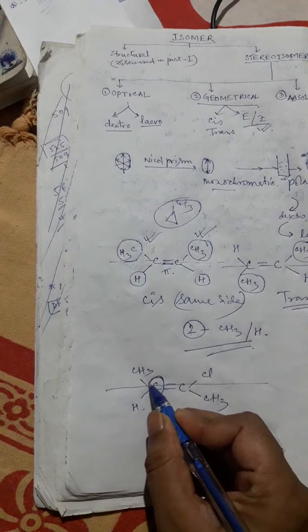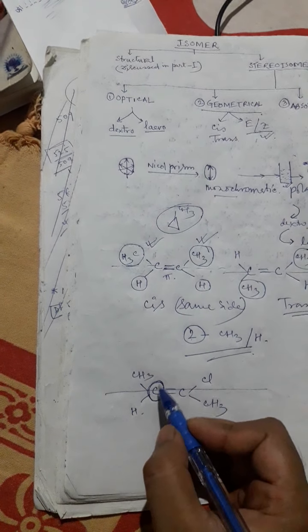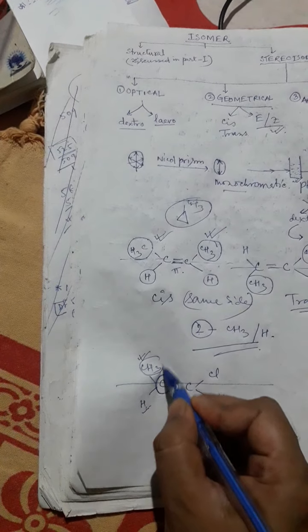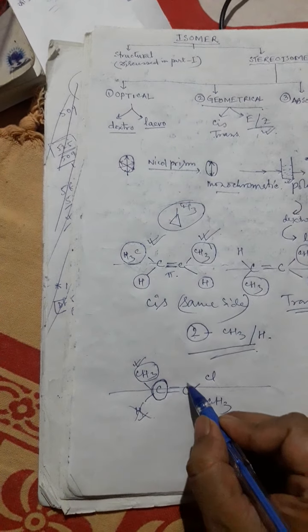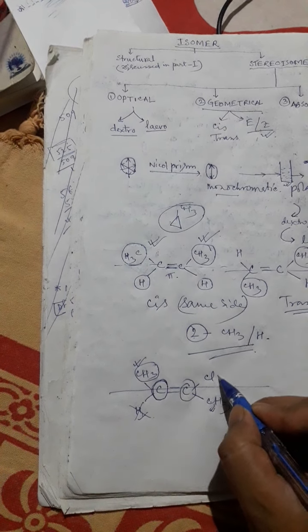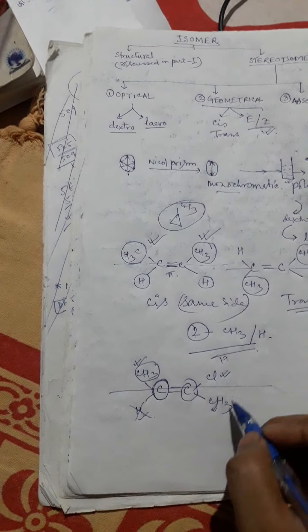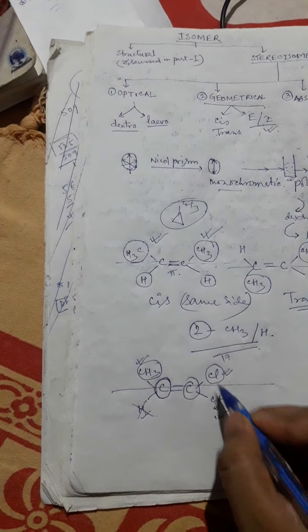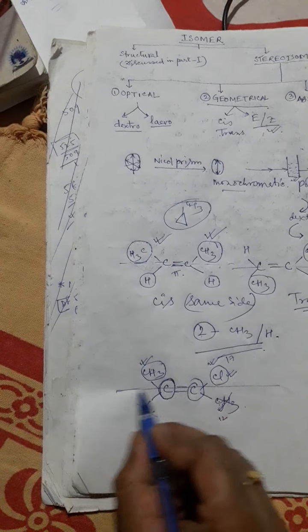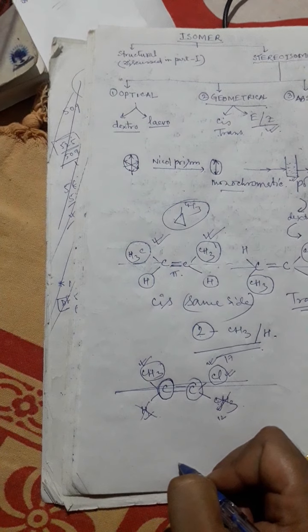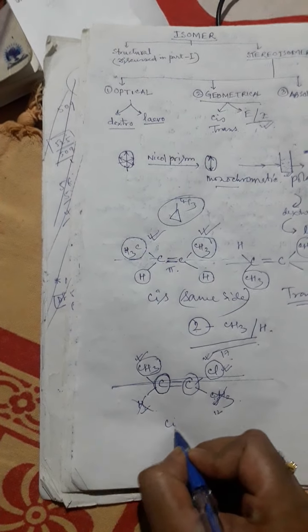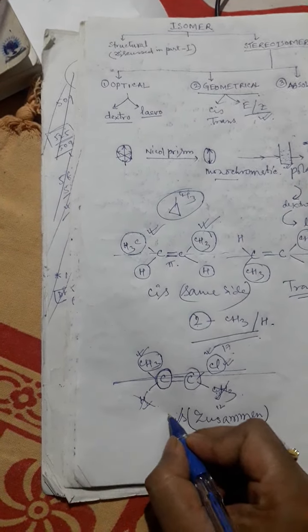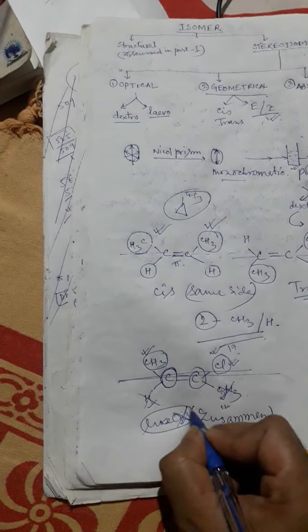Consider one carbon first. This carbon is attached with two groups: CH3 and H. Among these two groups, CH3 is the bulkier one, so choose CH3 and obsolete H. Now consider the other carbon with CH3 and Cl. The atomic number of Cl is 17 and carbon is 6, so Cl is the bulkier group. Now consider where the two bulkier groups are — if they are on the same side of the plane (cis-type), then in E/Z nomenclature it is called zusammen.